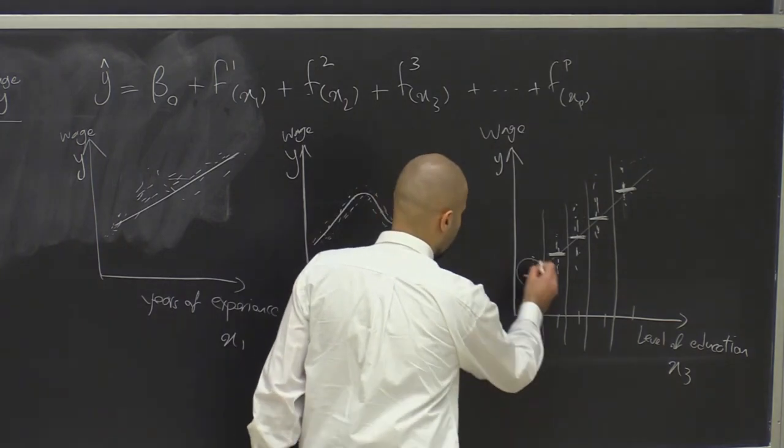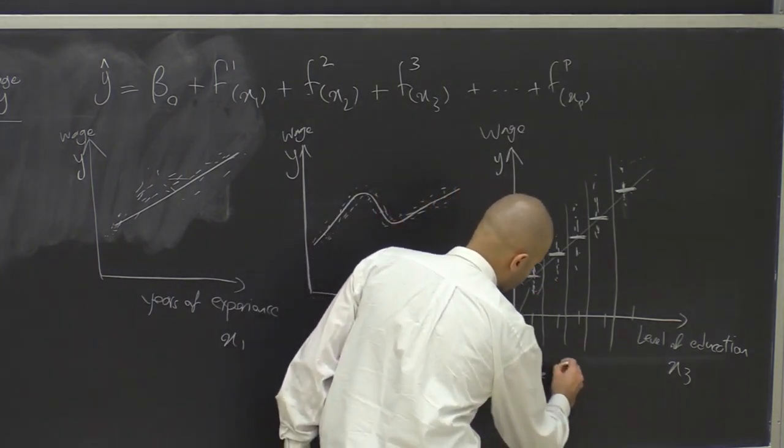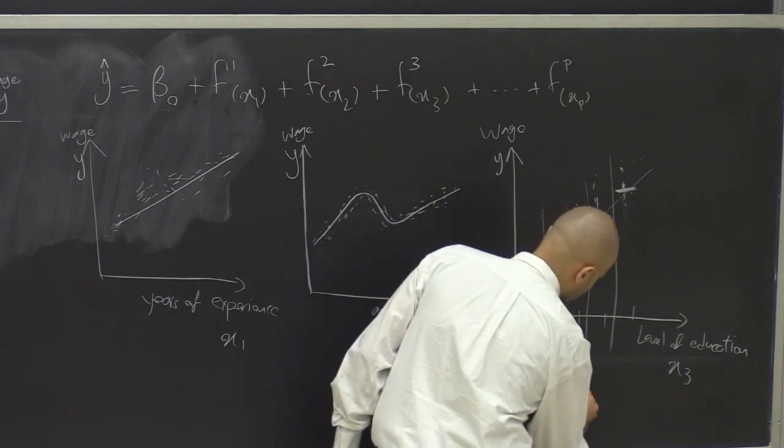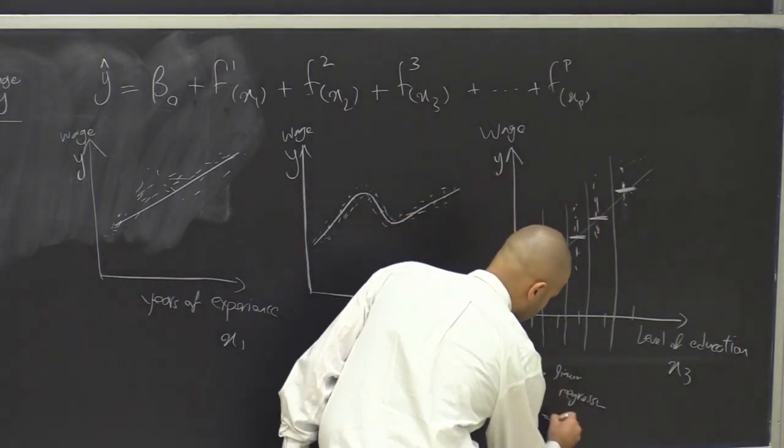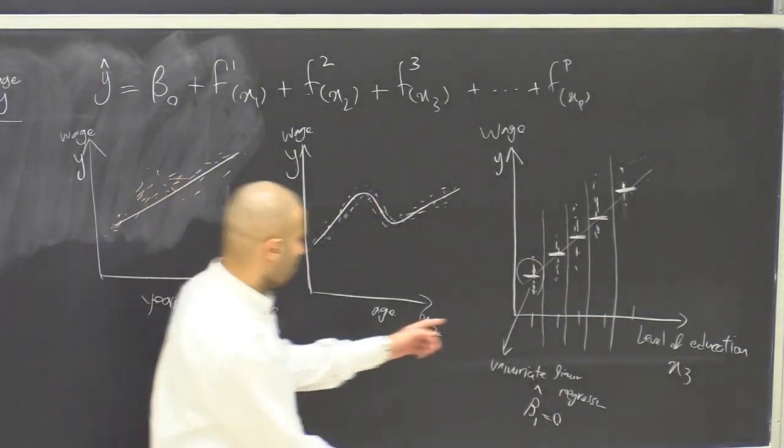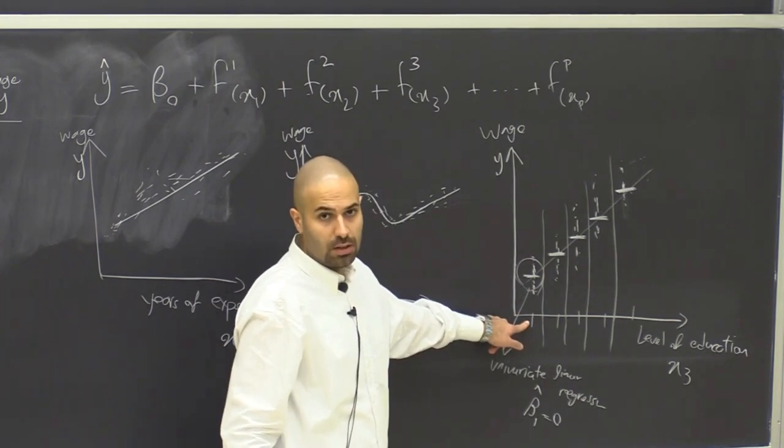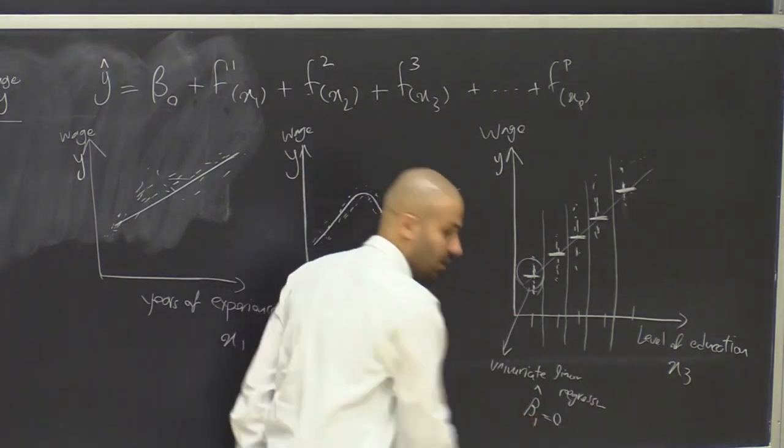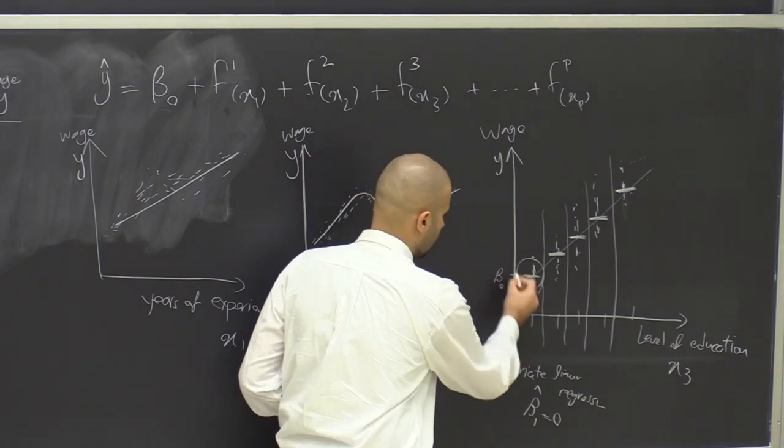So this is called a step function, but this is nothing other than some univariate linear regression in which beta 1 becomes 0. It becomes 0 because within this local area, x doesn't change at all. So the best prediction we can have is just finding the intercept. The intercept would be this. This is some beta 0 that we're going to have for this region.